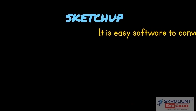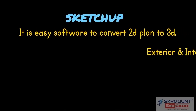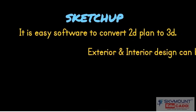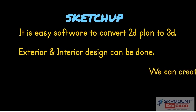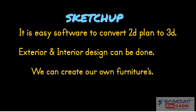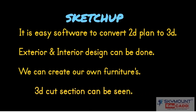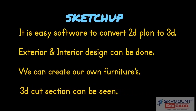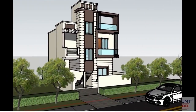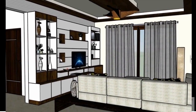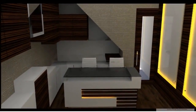Sketchup — it is easy software to convert a 2D plan to 3D. Exterior and interior design can be done. We can create our own furniture. 3D cut section. Quick 3D model done in Sketchup. A quick interior model in Sketchup. Interior model in Sketchup.